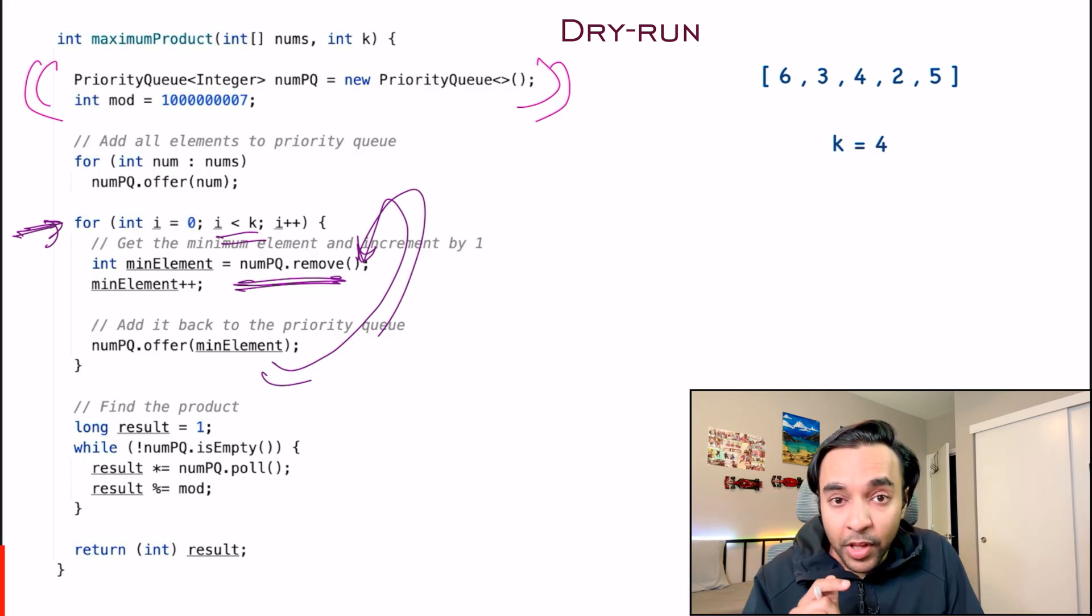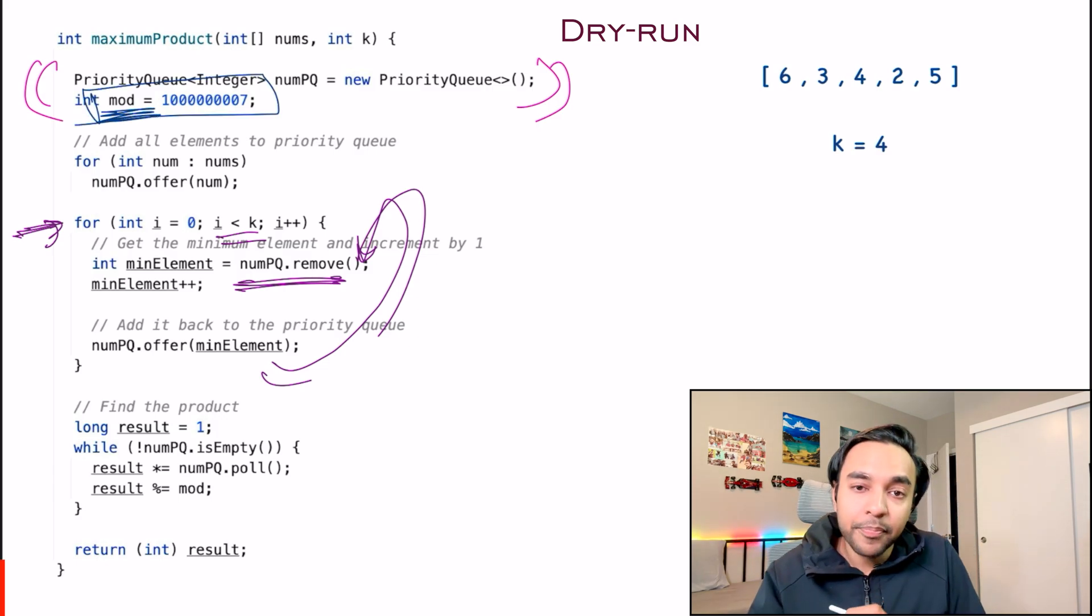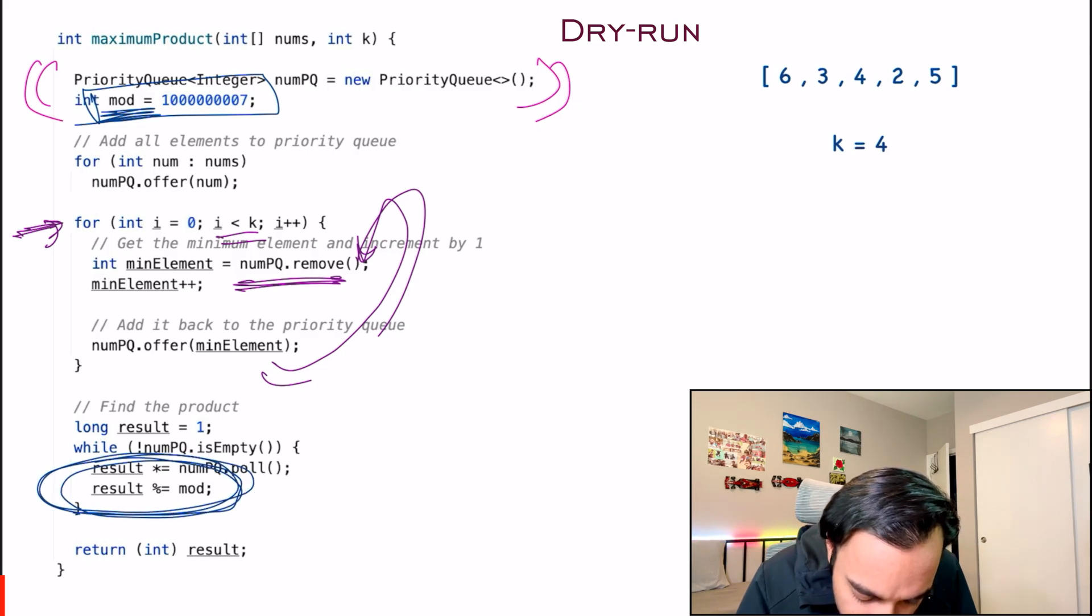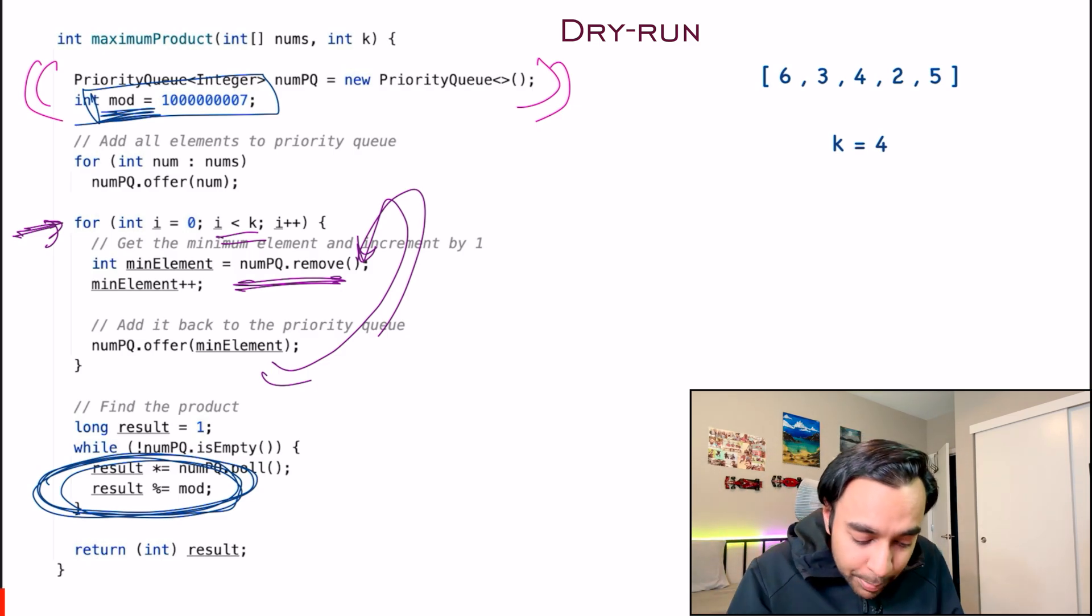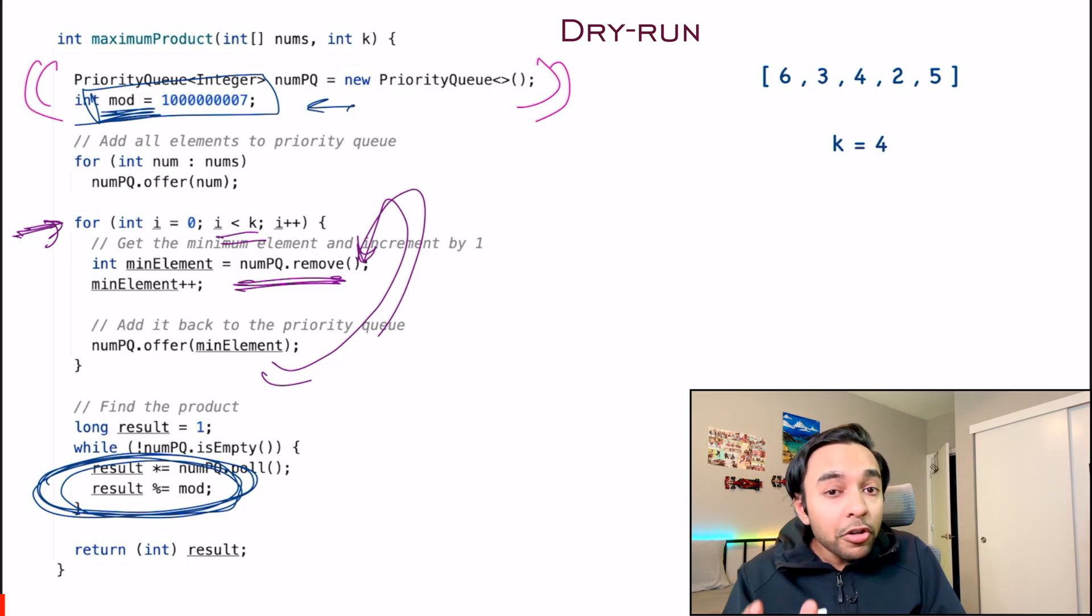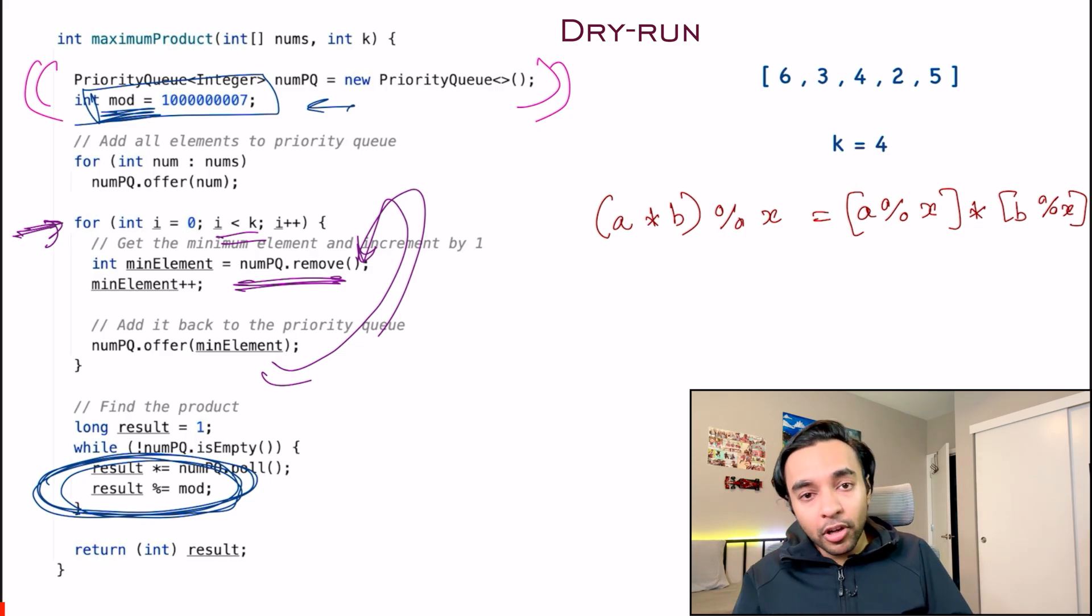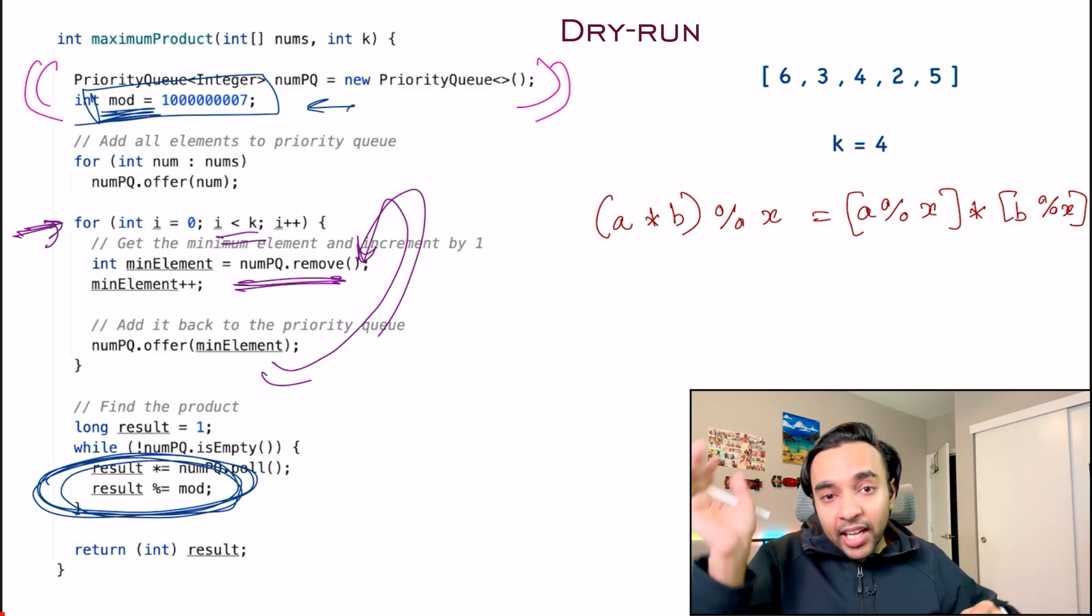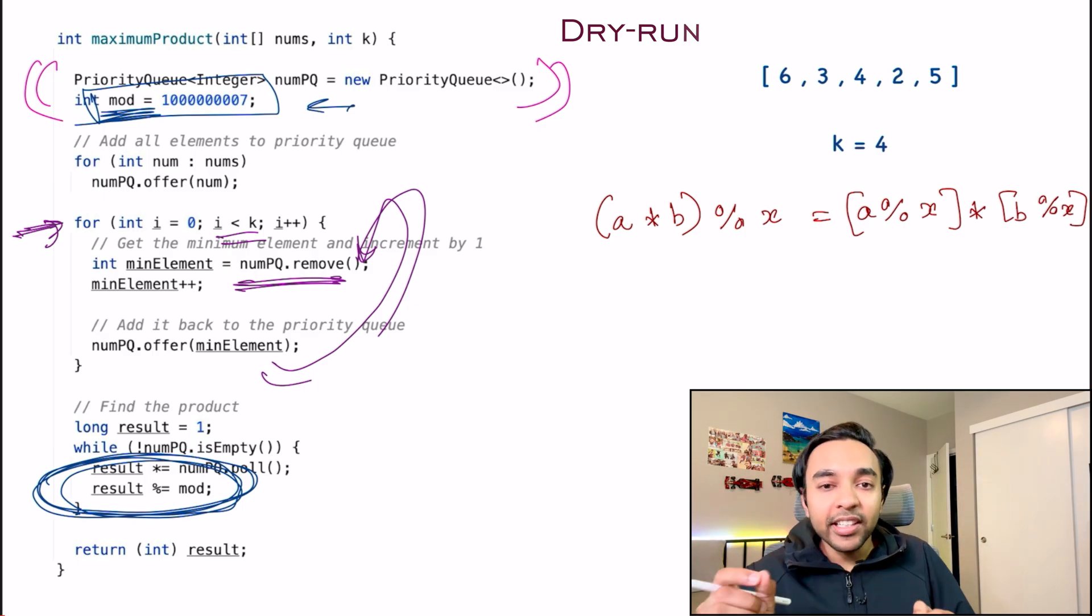We missed out one important factor. What about the mod value? We see that we had initialized this mod value over here. But where do we actually use it? We are using this mod value every time we find a result. So every time you multiply a number, just do it modulo this particular number. That is because the modulo property is commutative. It simply means that a into b modulo x will give you the same answer as a modulo x into b modulo x. So it does not matter that you find out the entire product first and then do a modulo. You can modulo each of the results and then multiply them to find the final answer.